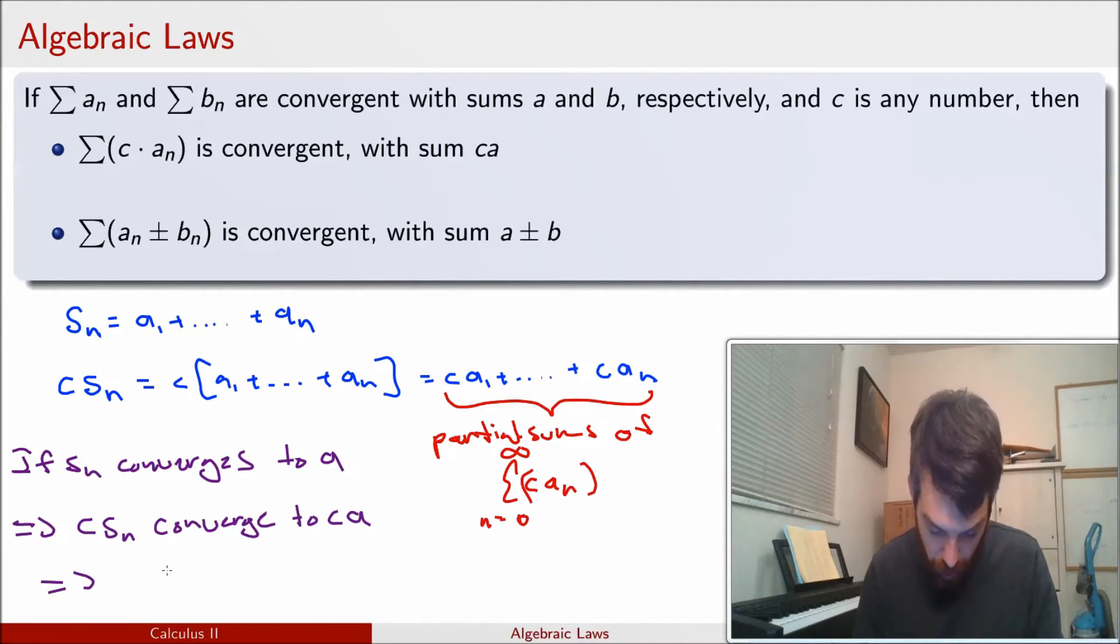and this is going to imply that the sum from n equal to 0 to infinity of the cAₙ's is just the exact same thing as c times a, in other words, c times the sum from n equal to 0 to infinity of Aₙ.